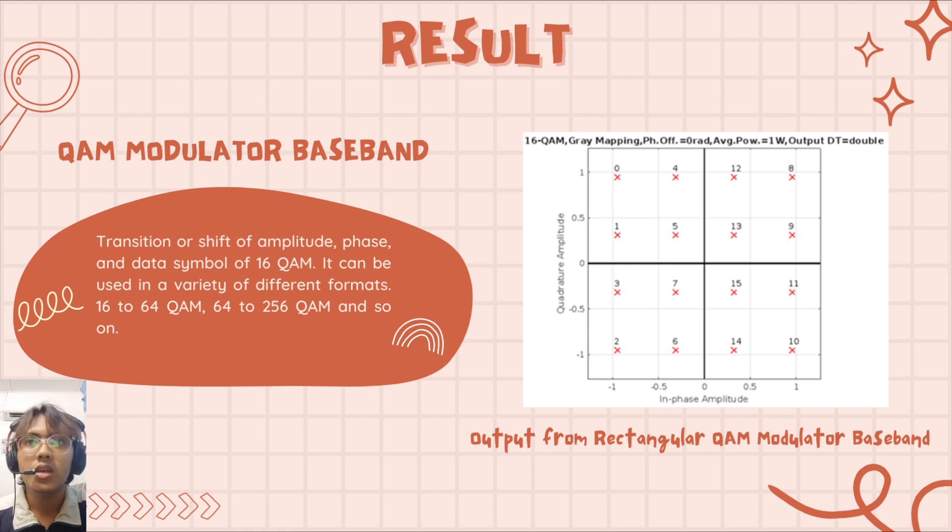For the results, this is the output from rectangular QAM modulator baseband. Transition or shift of amplitude, phase, and data symbol of 16-QAM. It can be used in a variety of different formats: 16 to 64 QAM, 64 to 256 QAM, and so on.